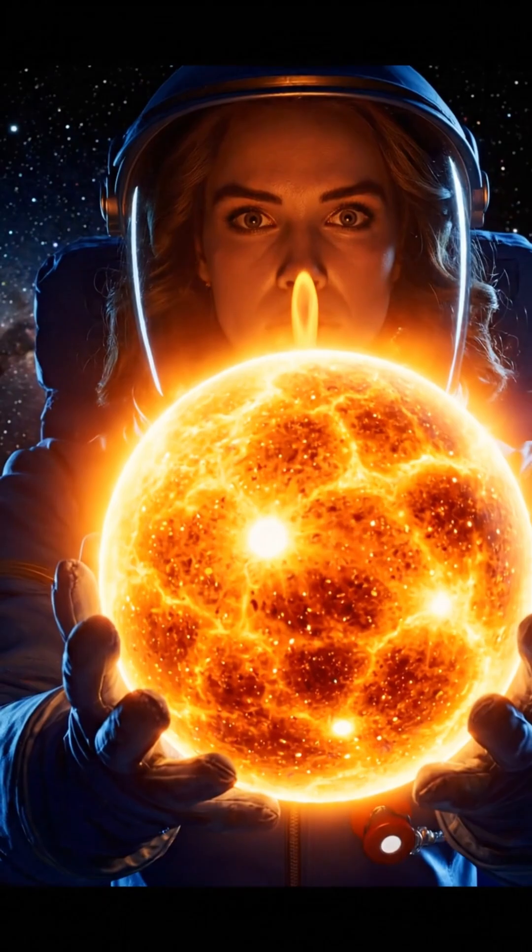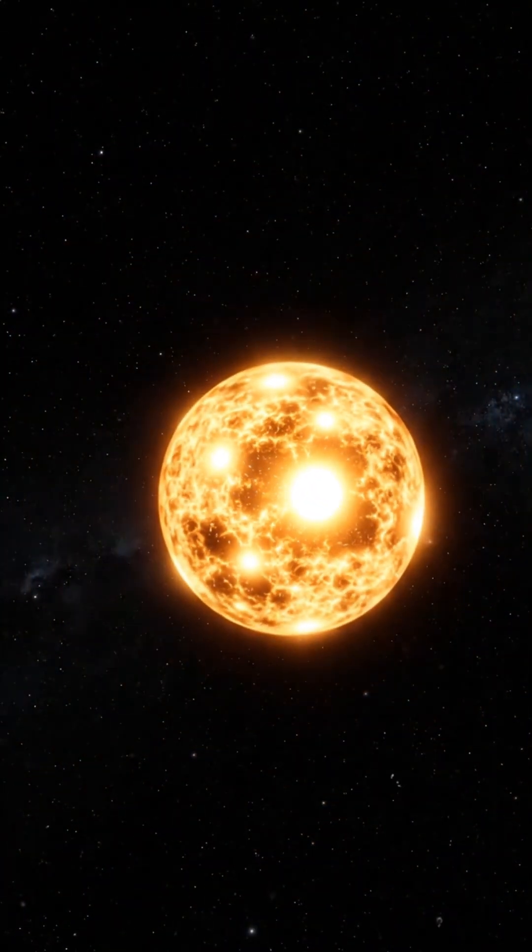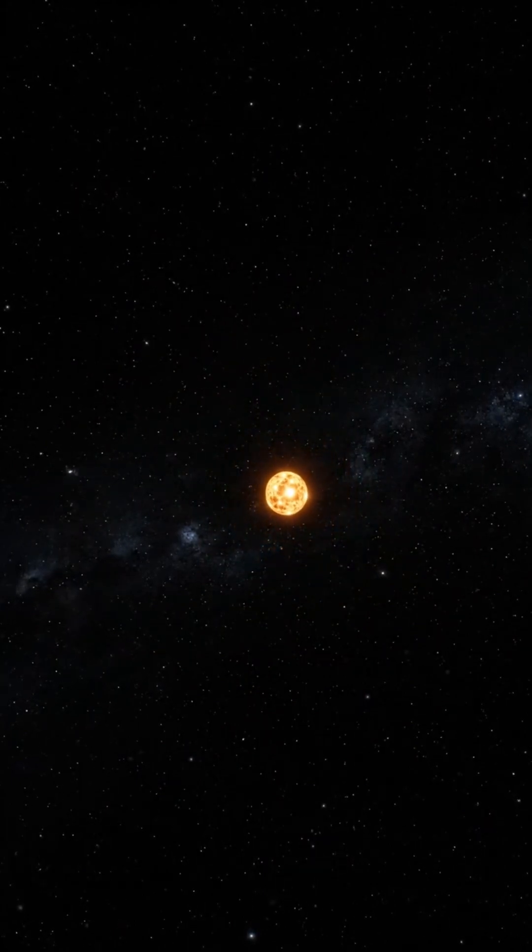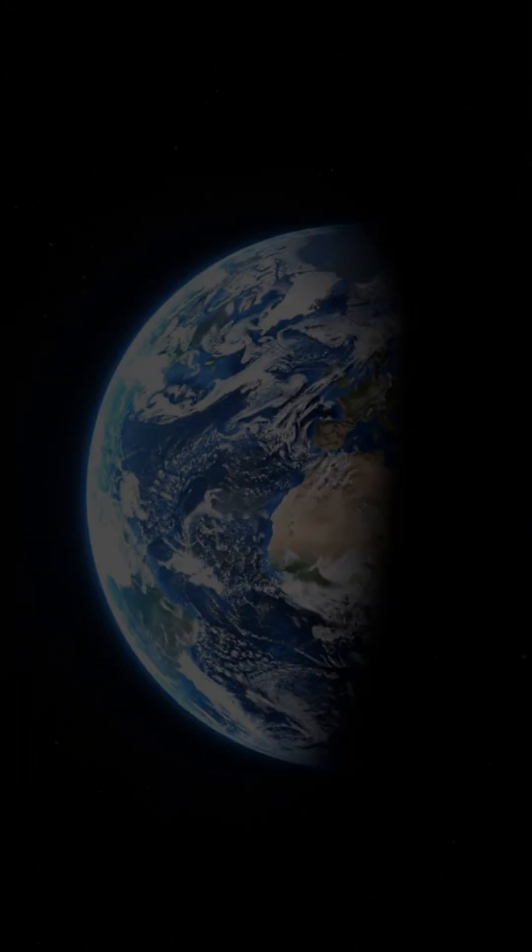Imagine holding the entire sun in your hands like a basketball. If the center of our world were that small, where would the earth be and how tiny would we truly feel? If the sun is scaled down to a standard 24 centimeter basketball, the scale of our neighborhood changes drastically.